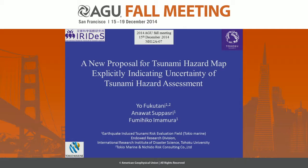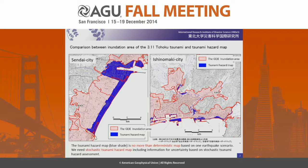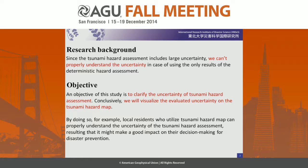In this presentation, I'd like to mainly focus on the uncertainty of tsunami hazard. What I'm showing here is a comparison between the inundation area of the March 11 Tōhoku Tsunami and hazard maps which had been published before the earthquake. The red area shows the inundation area of the March 11 Tōhoku Tsunami, and the blue area shows the tsunami hazard map. You can see a big difference between the red area and blue area. The present tsunami hazard map in Japan is no more than a deterministic map based on one earthquake scenario. We need a tsunami hazard map including information for uncertainty based on stochastic tsunami hazard assessment.